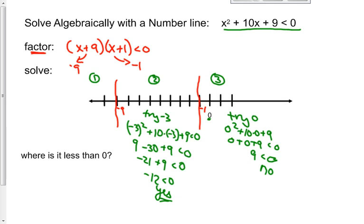And then we've got one more section over here. I need to pick some number smaller than -9. Let's try -10 and plug that in. (-10)² + 10(-10) + 9 < 0? 100 - 100 + 9. Those cross each other out. Is 9 < 0? That answer again is no.